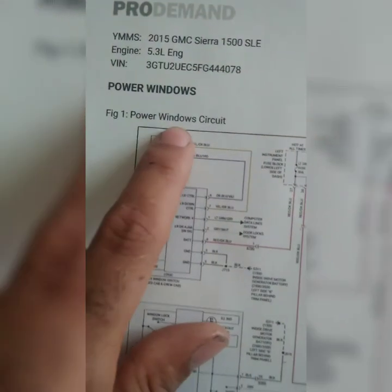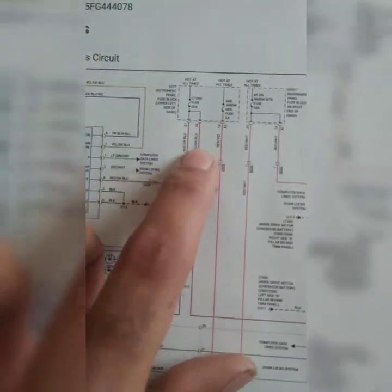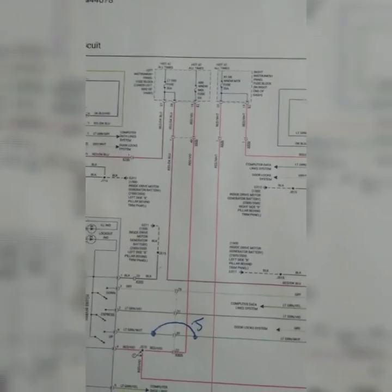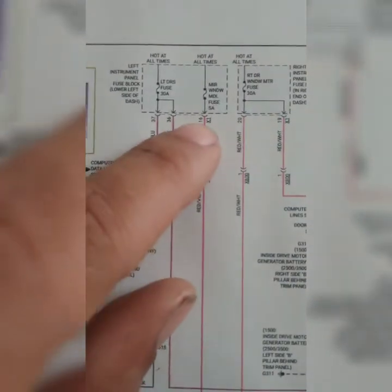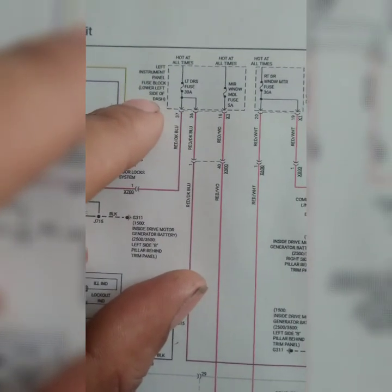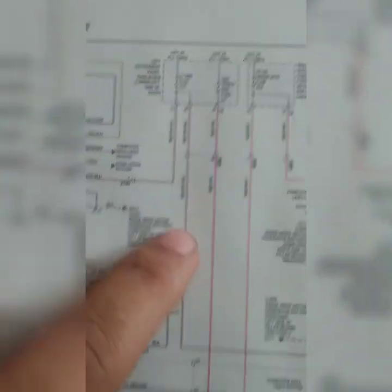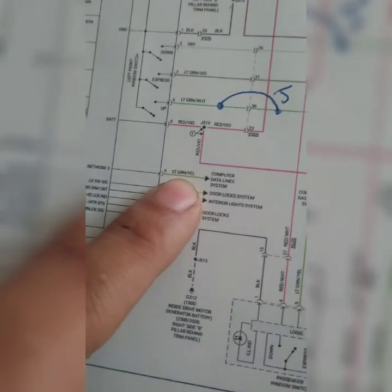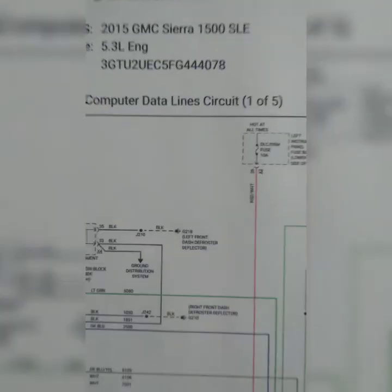You can see here that it goes from the fuse, goes down. Let's see if I can help you zoom in. So it goes from a 5 amp fuse, left instrument panel fuse block, lower left side of dash. So it goes down, you got power - boom - that's battery power. Then you got the ground, and they can have both going there directly and it still won't work if this data line ain't working right.